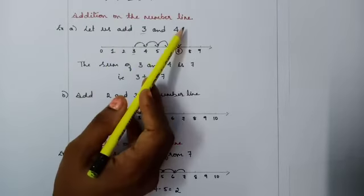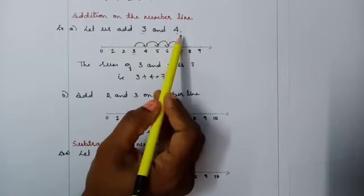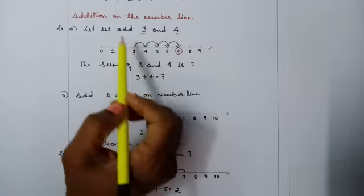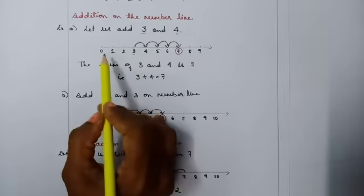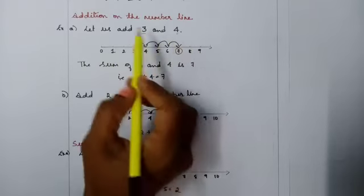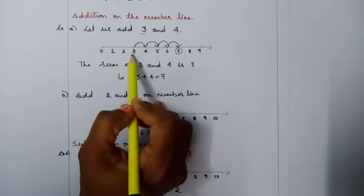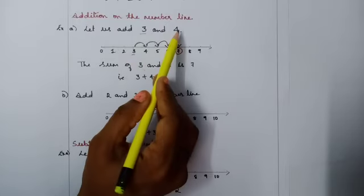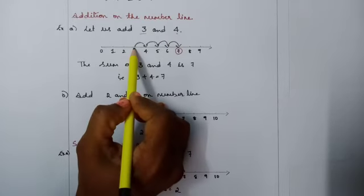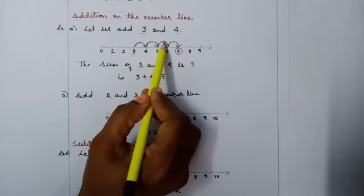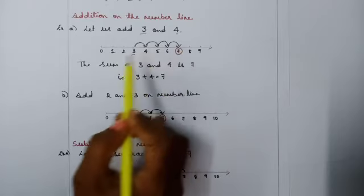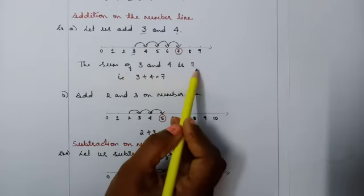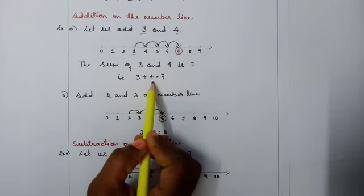Addition on the number line. Let us learn to add two numbers on the number line. Let us consider the numbers 3 and 4 to be added. The first number is 3, so we start from 3. The next number is 4, so from 3 we move 4 steps: 1, 2, 3, 4. Our answer is 7. That means the sum of 3 and 4 is 7, that is 3 plus 4 equals 7.